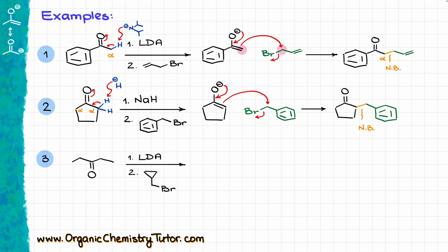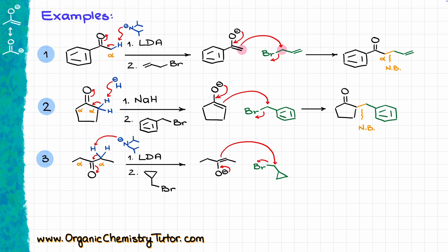Let's look at one more example. Here I'm using 3-pentanone as my starting material and treating it with LDA followed by a more complex-looking alkyl halide. As usual, we start by enolizing our molecule — we have two alpha positions, and since the molecule is symmetrical it doesn't matter which we choose. I'll go with the one on the right. LDA comes in, pulls the proton off, giving the corresponding enolate. I then draw the alkyl halide and perform the attack from one carbon onto another, kicking out the leaving group and making a fun-looking final product. The reaction is straightforward: identify the alpha position, deprotonate with LDA or a hydride to make the enolate, then perform a simple SN2 reaction making a new carbon-carbon bond.